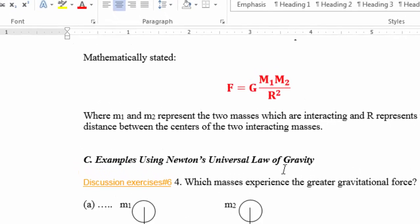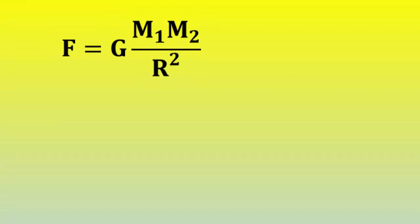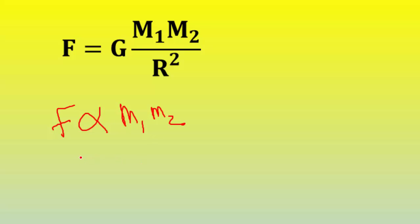As you see, the force of gravity is directly proportional to the multiplication of the two masses divided by the distance squared between the centers of the two masses. So that tells us that the force of gravity is directly proportional to m1 times m2, and inversely proportional to the distance squared between the centers of the two masses.